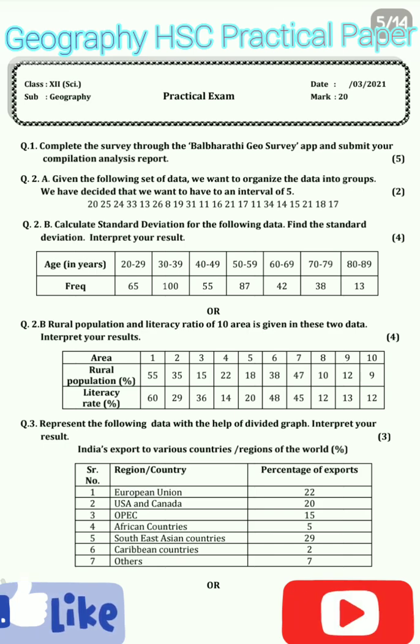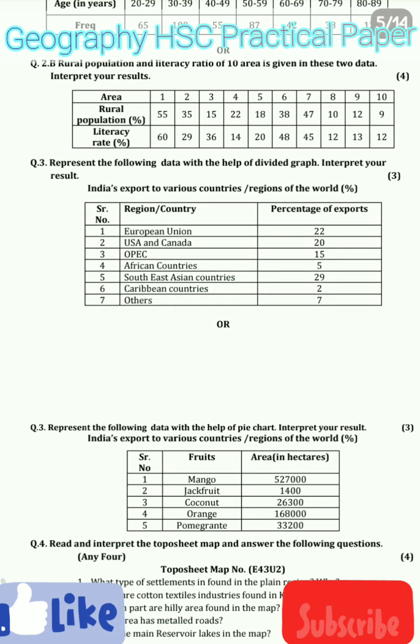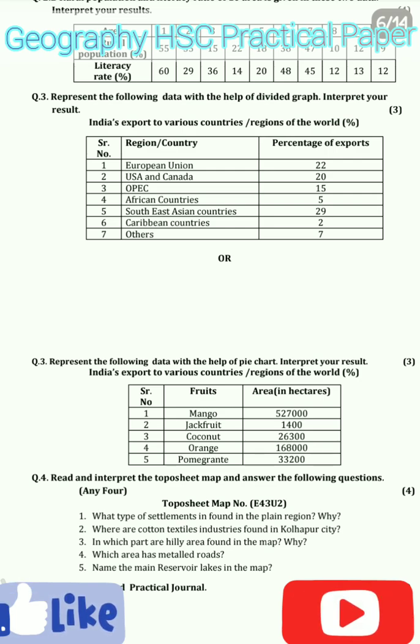Question number 3 has two parts: the first is on divided bar graph and the second is on divided circles, that is pie chart. For the divided bar graph you have to draw a bar graph, and for the pie chart you have to convert the data, make a circle, and start plotting it with the help of a protractor. Question 3 carries a total of 3 marks.